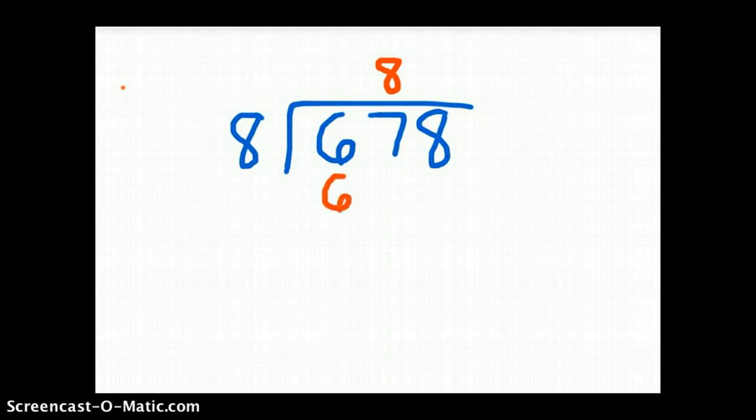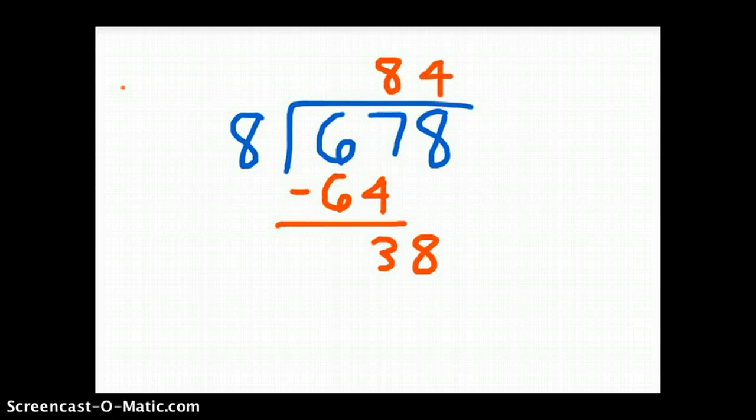We'll notice that we place the 8 in that tens place because we were looking at 67 tens. 8 times 8 is 64. 67 minus 64 is 3. And we can bring down the 8. 38 divided by 8 is 4 because 4 times 8 is 32. And 38 minus 32 is 6.